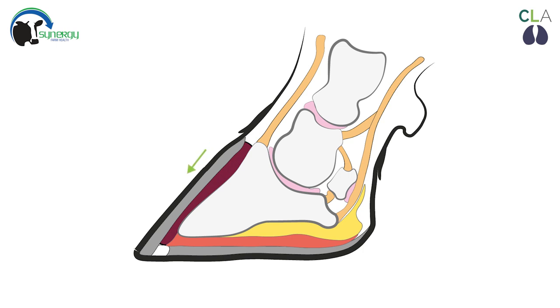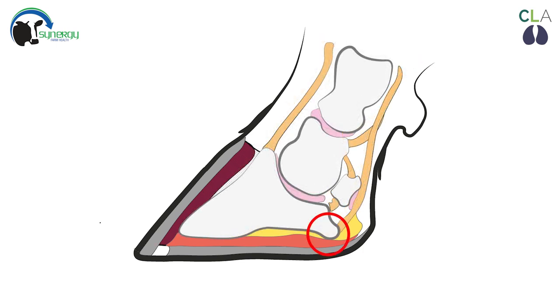Wall horn grows from the corium or quick at the coronary band and is connected to the pedal bone via the lamellae, which create a very strong interlocking system. If this connection weakens, the pedal bone can rotate and drop, putting more pressure on the corium at the solar ulcer site.